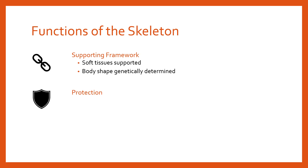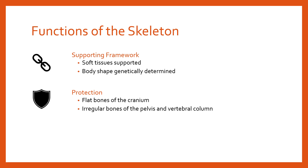Secondly, we've got protection. Some parts of the skeleton, particularly parts of the axial skeleton, have a key function of protecting whatever's underneath them. You can think about the flat bones of the cranium that make up the skull — they're obviously protecting the brain and brain stem. Various other irregular bones like the pelvis protect the reproductive organs, and the vertebral column protects the central nervous system. So the second function is protection.